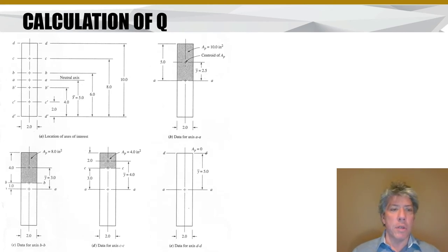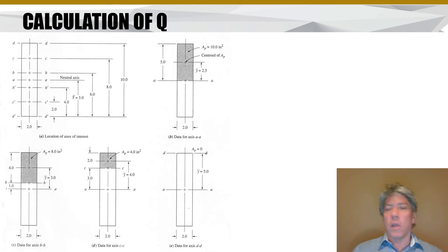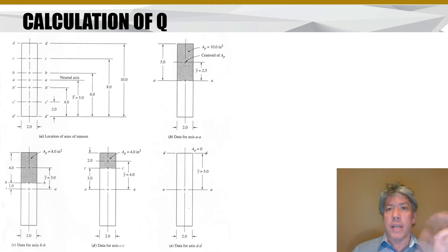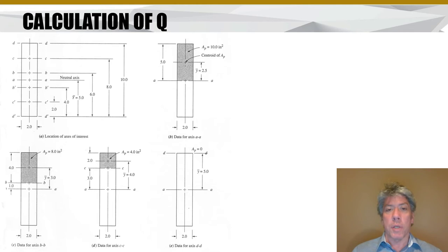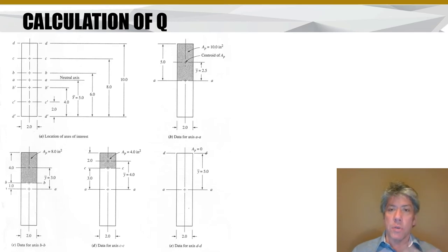Imagine you have a simple rectangle and want to compute the stress at some distance from the centroid. You're interested in all the area beyond that particular line. Y-bar is the distance from the centroid of the overall shape to the centroid of that area beyond the line where you'd like to compute the stress. Here's that rectangular beam. If we're interested in the shear stress along the center line — which is coincident with the centroid — then A sub P is the area beyond that line. Y-bar is the distance between the centroidal axis and the centroid of that shaded particular area.